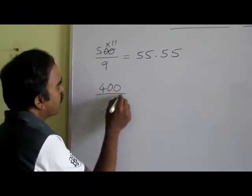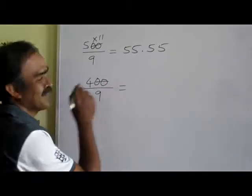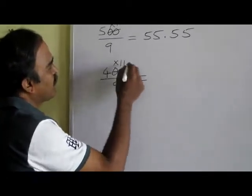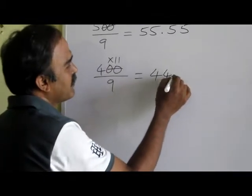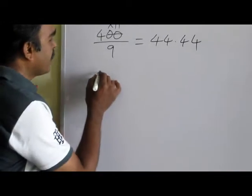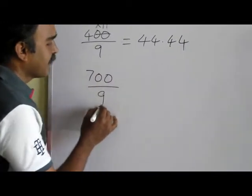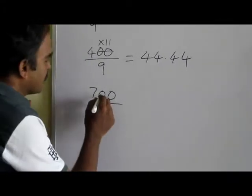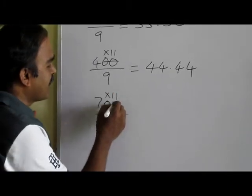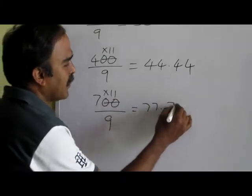What is 400 divided by 9? Take out the two zeros and multiply by 11. 4 times 11 is 44. One more: 700 divided by a similar divisor — multiply by 11. 7 times 11 is 77, so the answer is 77.77.